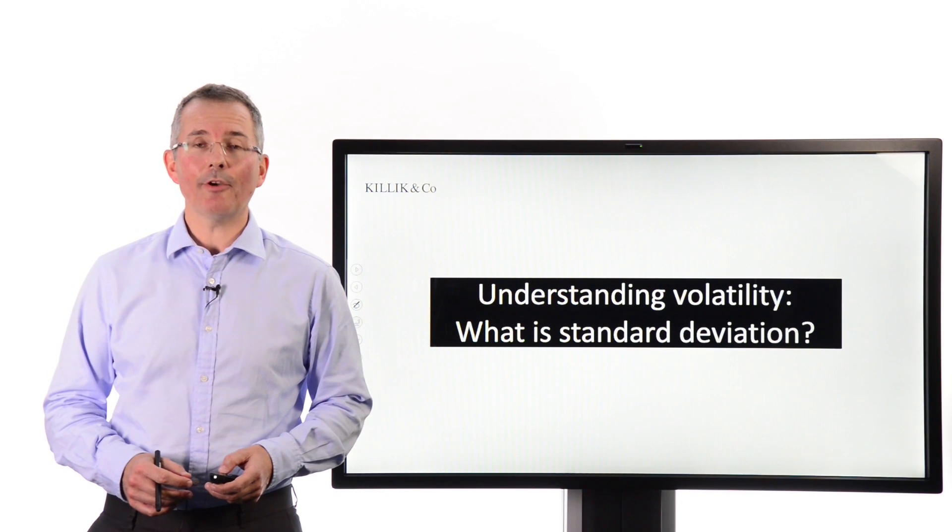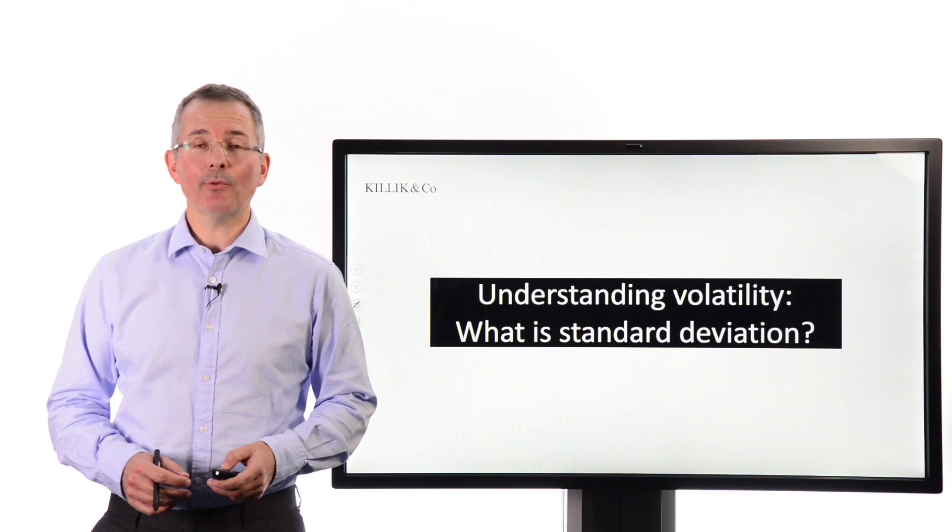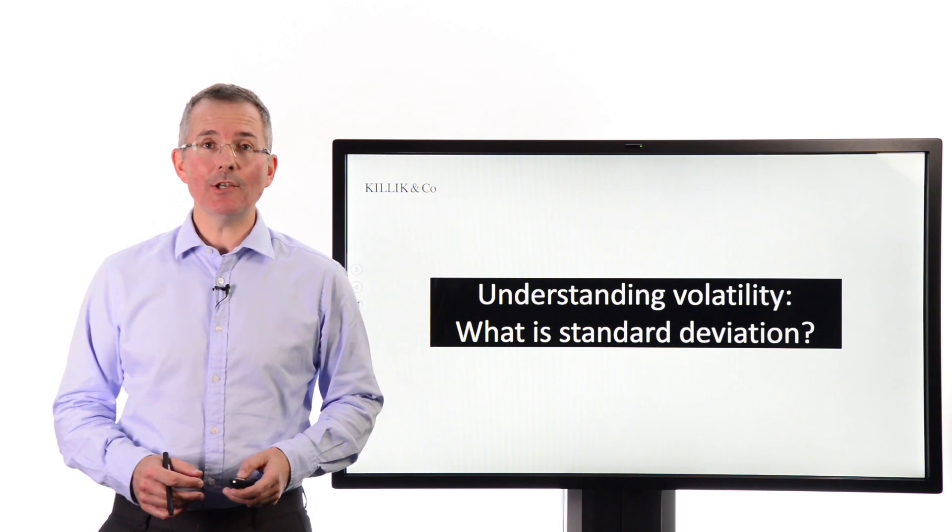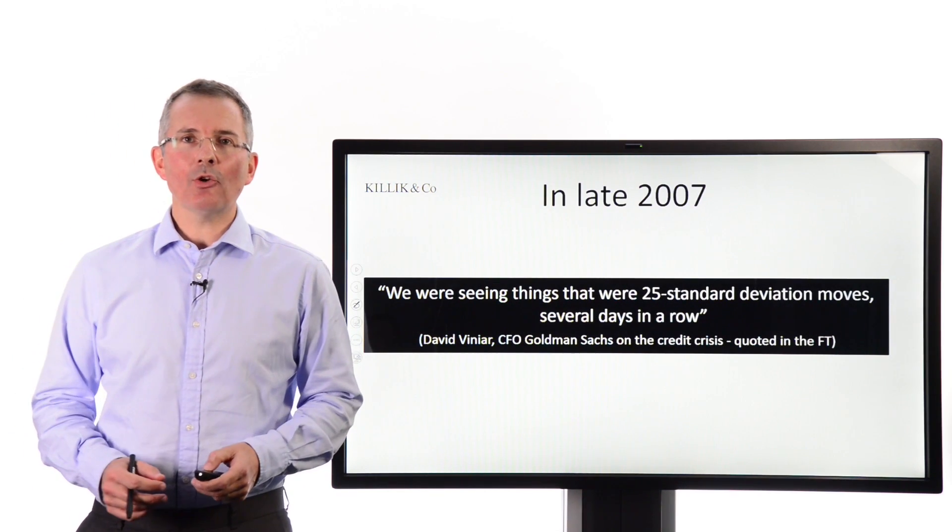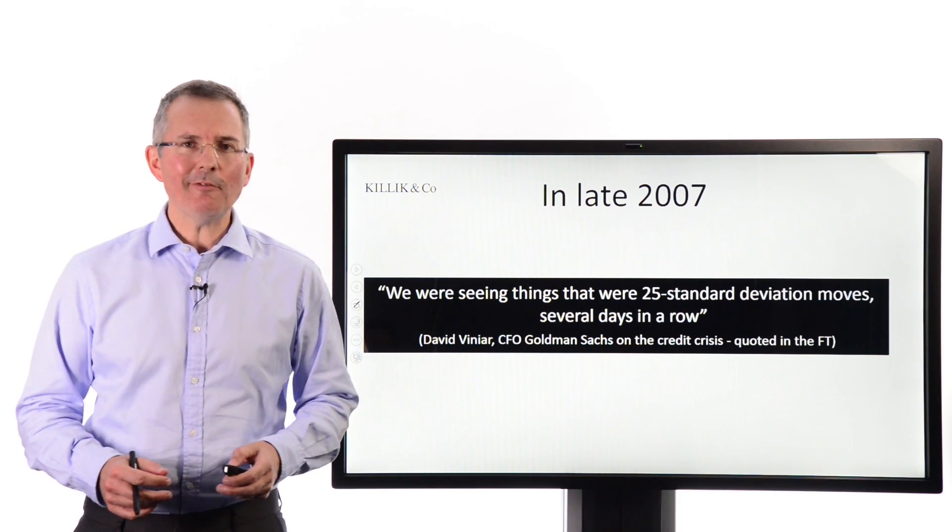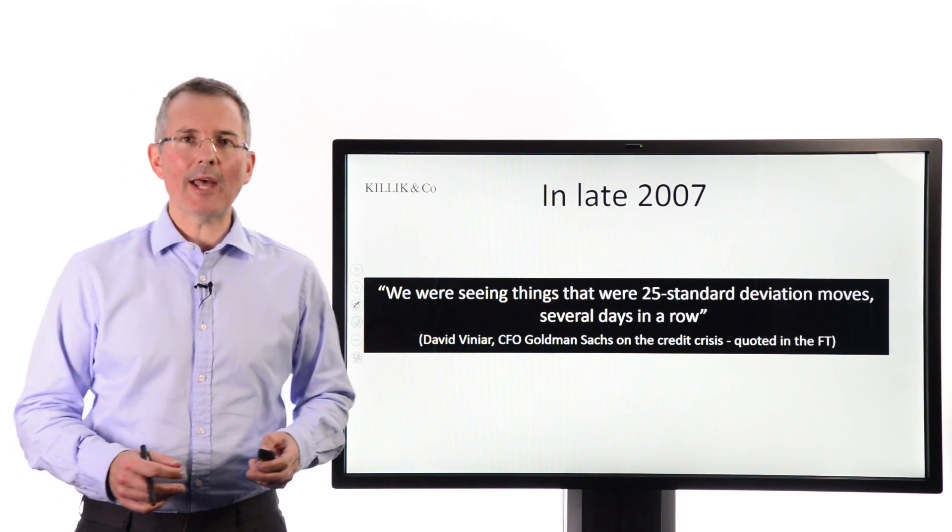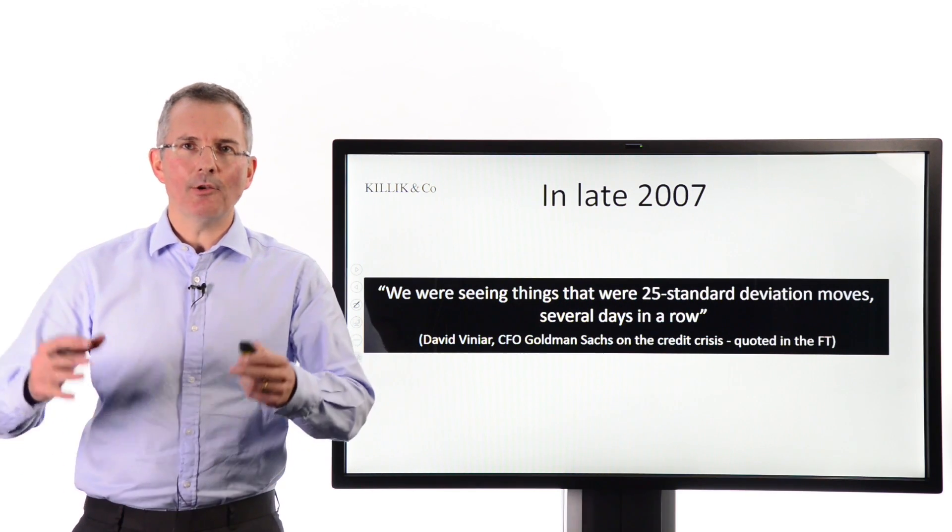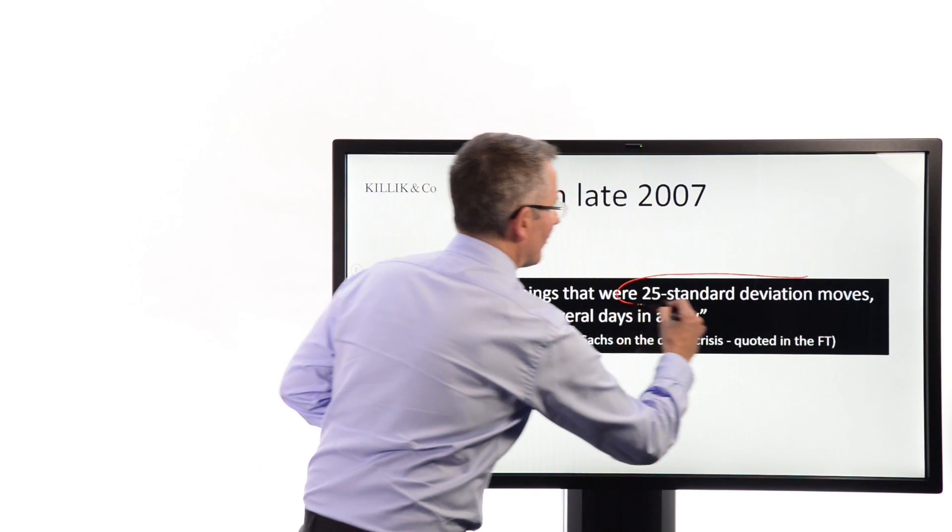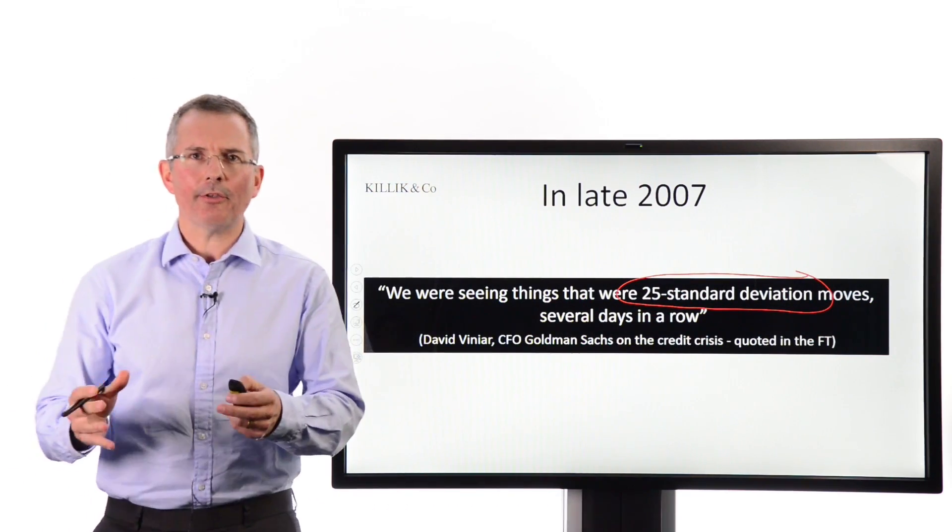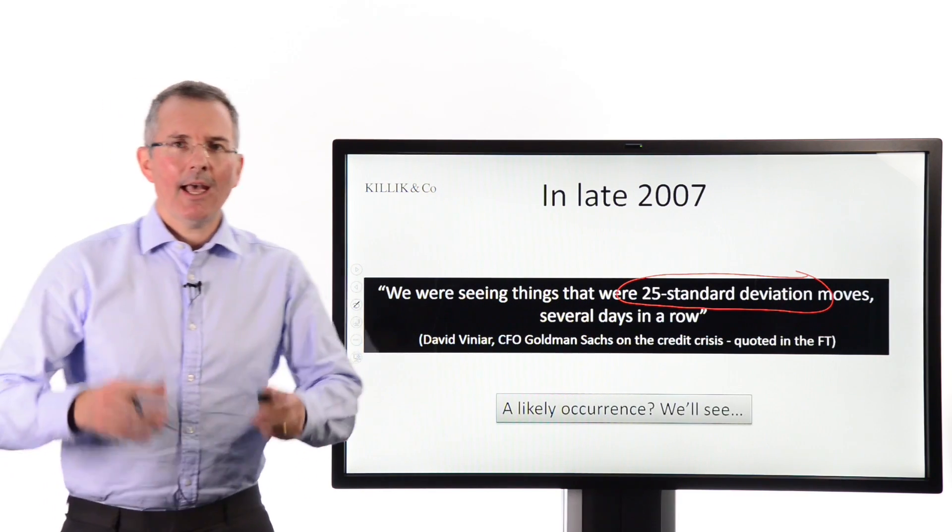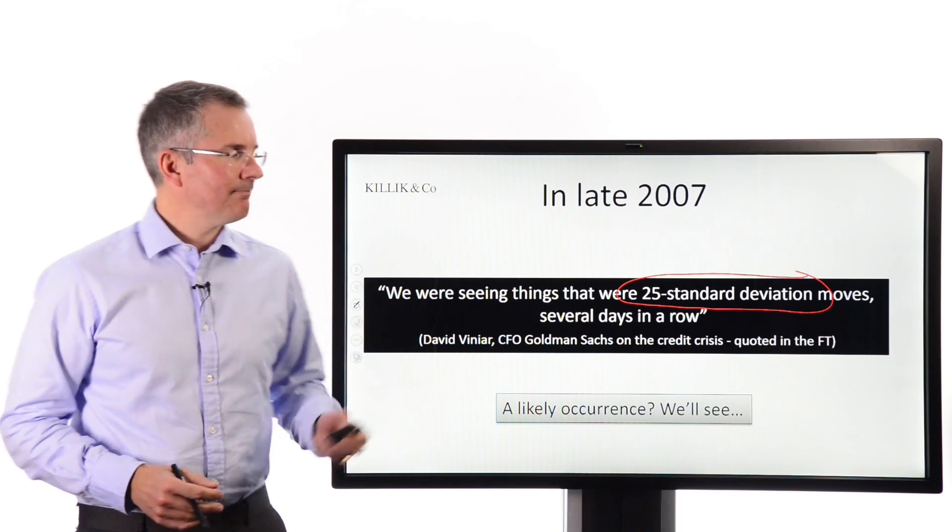Understanding volatility is a key part of being a share investor. So in this video I want to look at one way of measuring volatility, standard deviation. Here's a quick quote from the credit crisis to get the ball rolling. We're seeing things that were 25 standard deviation moves several days in a row, said a well-known figure trying to explain what was going on back then. Well in this video let's just take a quick snapshot here and ask the question, what on earth could a 25 standard deviation event be and how likely in fact is it?